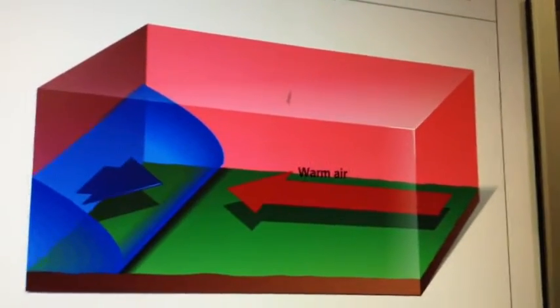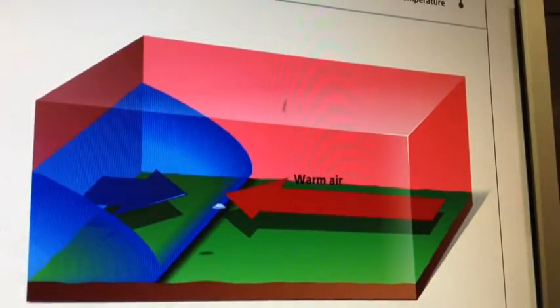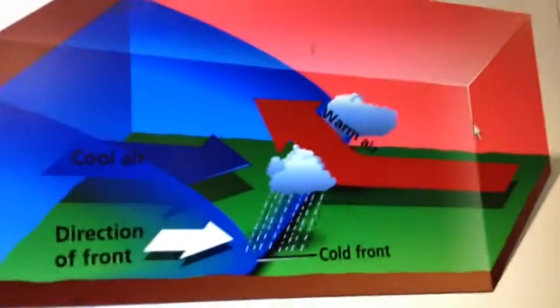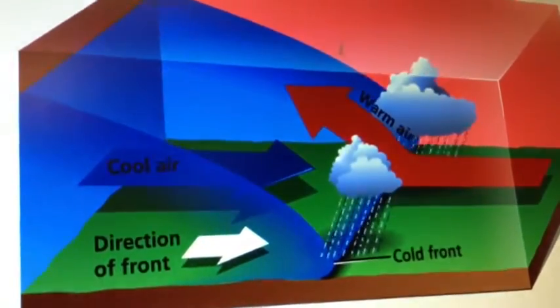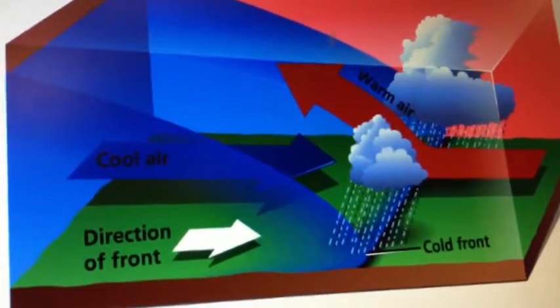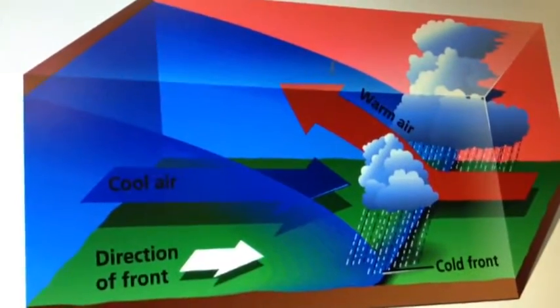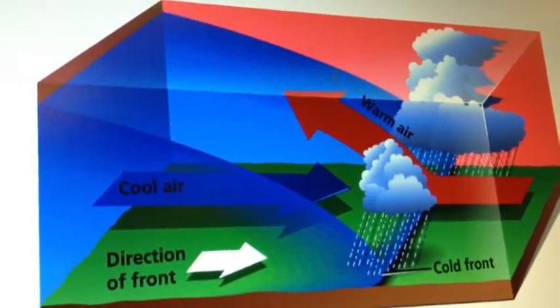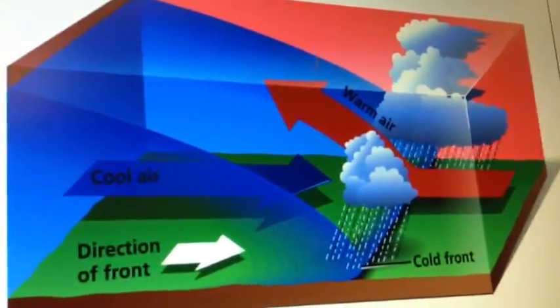A cold front occurs when a rapidly moving cold air mass runs into a slow moving warm air mass. Because the cold air is denser than warm air, the cold air mass remains close to the ground and sinks under the less dense warm air mass. As the warm air rises above the cold air, the warm air cools. It soon chills to the dew point temperature.